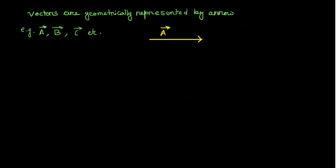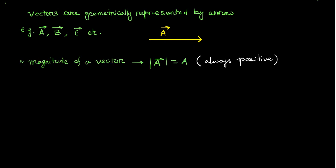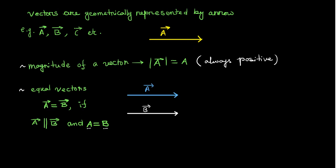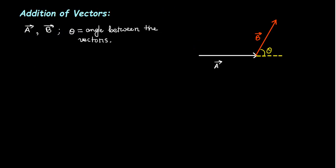Vectors are geometrically represented by an arrow. The length of the arrow gives the magnitude of the vector and the direction of the arrow gives the direction of the vector. The magnitude of a vector is always a positive number. Two vectors A and B are said to be equal if their directions are the same and their magnitudes are equal.